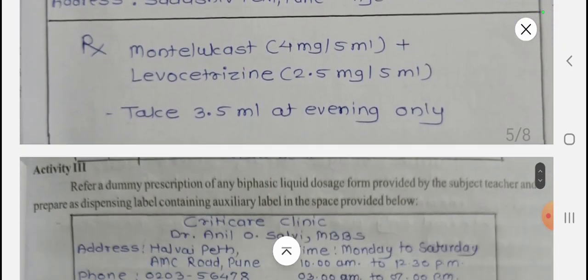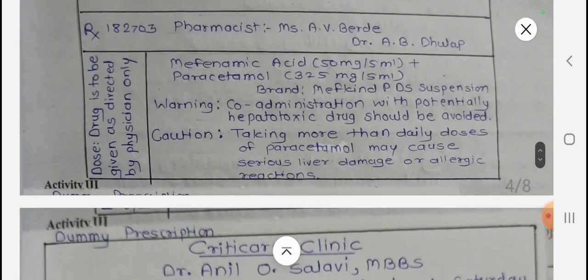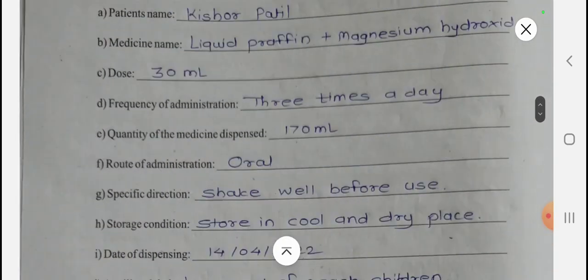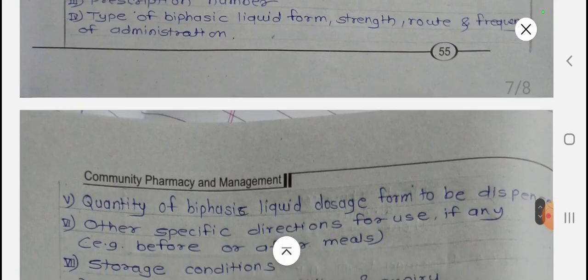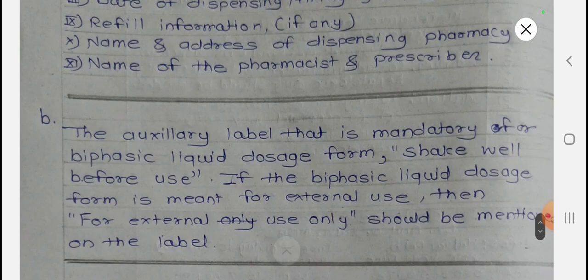Experiment Number 10 has been covered: from the dummy prescription the label is prepared, and all questions were solved. All experiments 1 to 12 are available on my channel under the playlist of practical stock community pharmacy and management. These videos will be very helpful for your practical exam, viva, synopsis, major experiment, and minor experiment. Thank you for watching this video — please share it with your friends because sharing is caring.